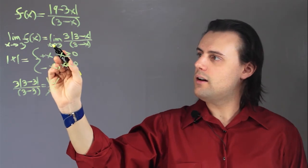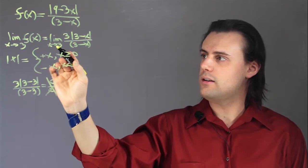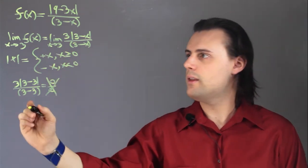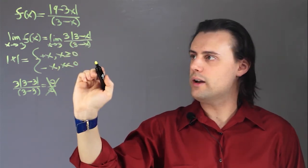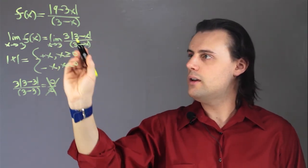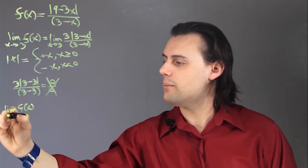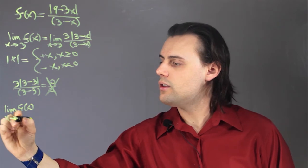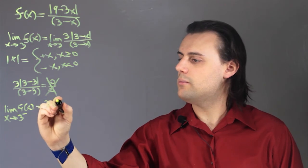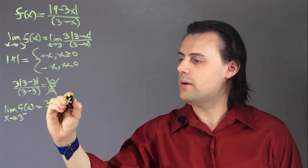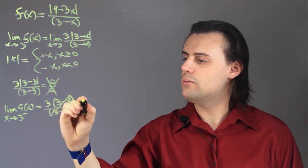If I take the limit of x as I'm approaching 3 from the negative side, from the side of numbers less than 3, then I see that I'm going to have a positive number inside the absolute value in the numerator. Therefore, the limit of my function as I approach 3 from the left-hand side becomes 3 times positive 3 minus x divided by 3 minus x, and this is simply equal to positive 3.